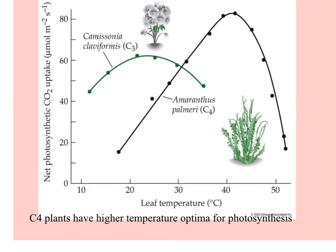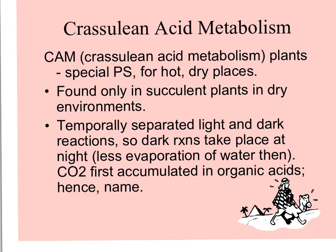If you look at the photosynthetic optimum — the temperature at which a plant has maximum photosynthesis — C4 plants have much higher temperature optima than C3 plants. Here are two California plants: the C3 camisonia, with its optimum temperature around 24 or 25 degrees, versus Amaranthus palmeri, with its optimum above 40 degrees centigrade.